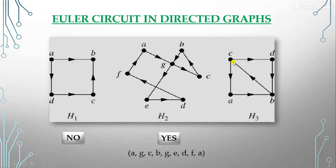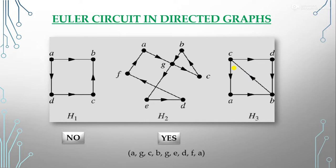For the third directed graph, we can trace c, d, b, c, a, b — this forms an Euler path but not an Euler circuit, because the first and last vertices are different (C and B). So it does not form an Euler circuit.